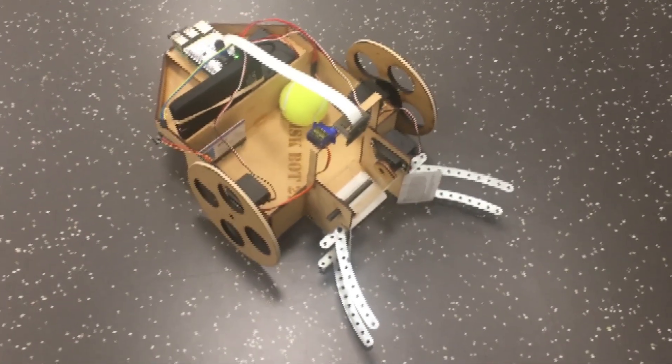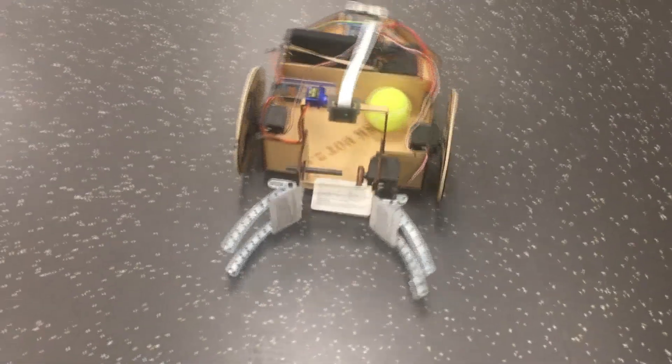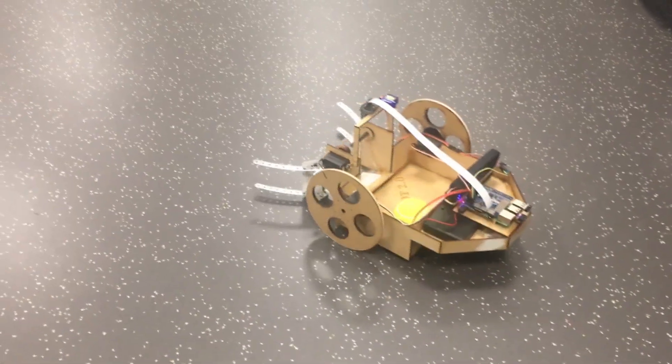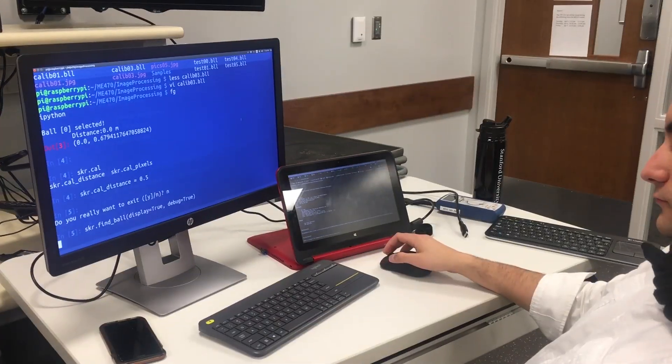Once the bot is initialized, it will take a picture and determine if there are any tennis balls nearby. If it does not detect a ball, it will rotate 40 degrees, take another picture, and process the new area.